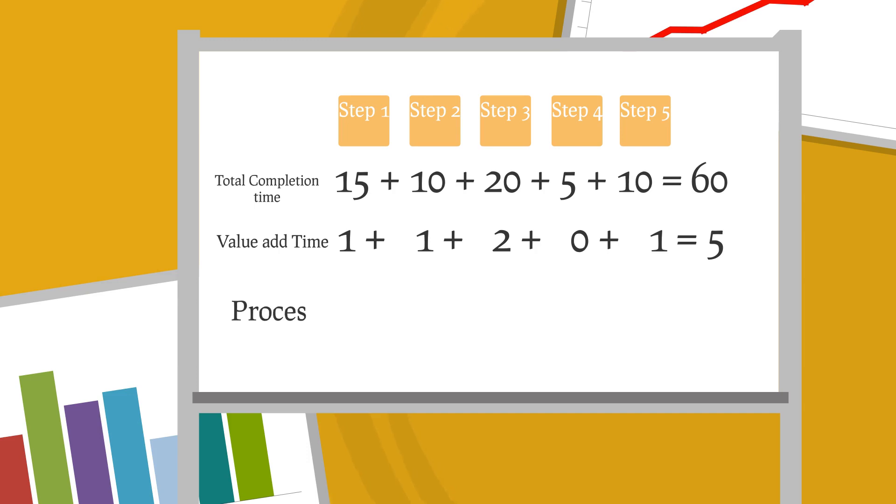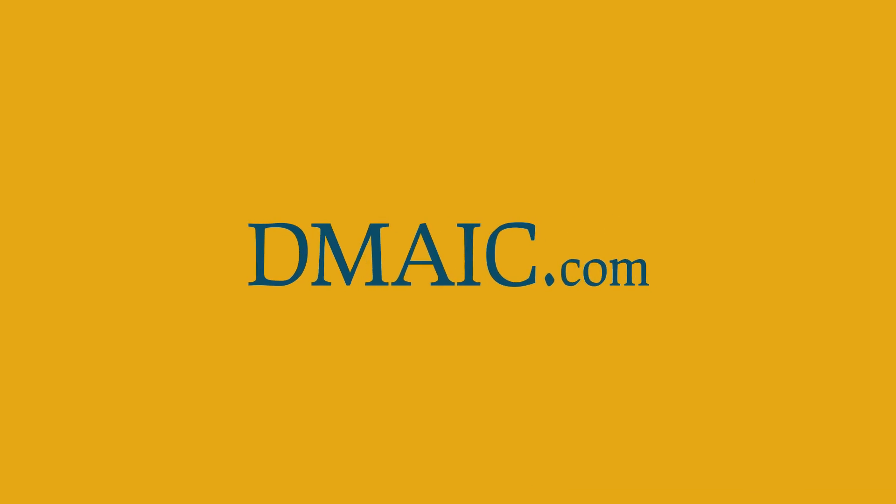Process Cycle Efficiency 5 divided by 60 times 100% equals 8.333%. So in this process, people are spending 8.333% of the time on adding value for the customer.